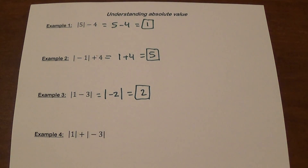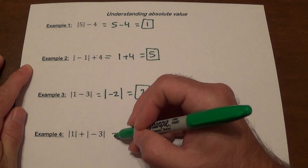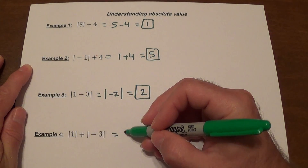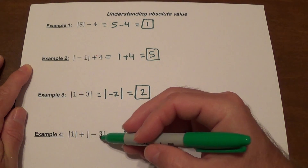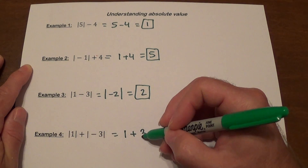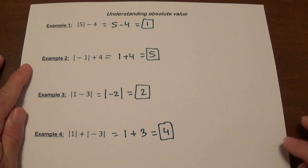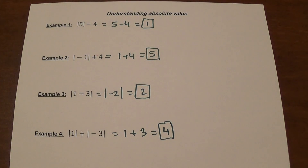In example 4, we have two absolute value symbols — two sets of them. We need to evaluate each one first, then add the results. The absolute value of 1 is 1, plus the absolute value of negative 3, which is positive 3. And 1 plus 3 is 4. I hope it's easy so far.